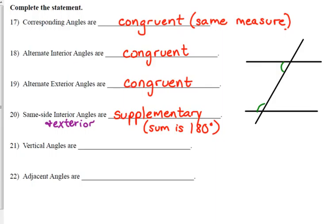Vertical angles. I just mentioned it a second ago. They are congruent or equal to each other.